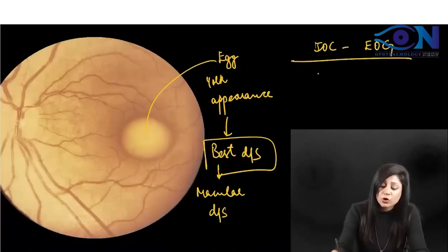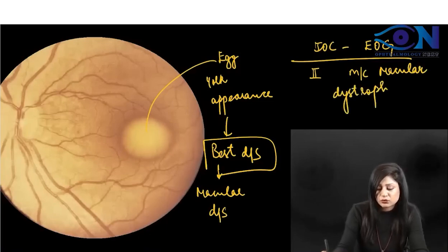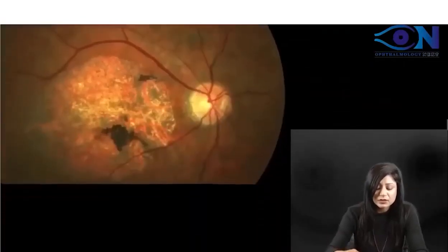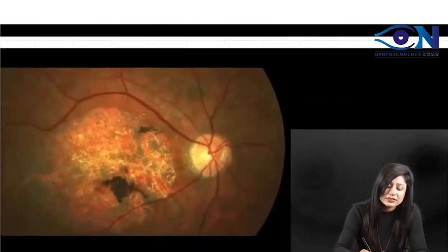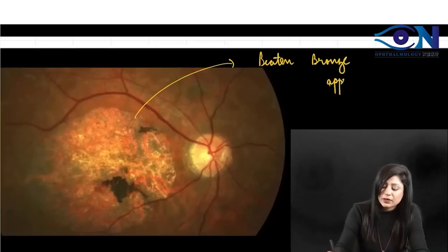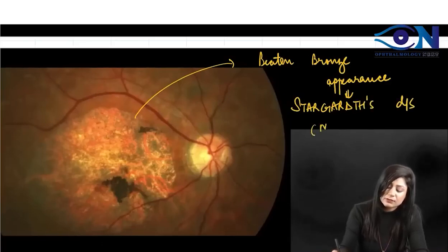Best disease is the second most common macular dystrophy. The most common macular dystrophy shows a typical beaten bronze appearance, which is seen in Stargardt disease. So Stargardt disease is the most common macular dystrophy.